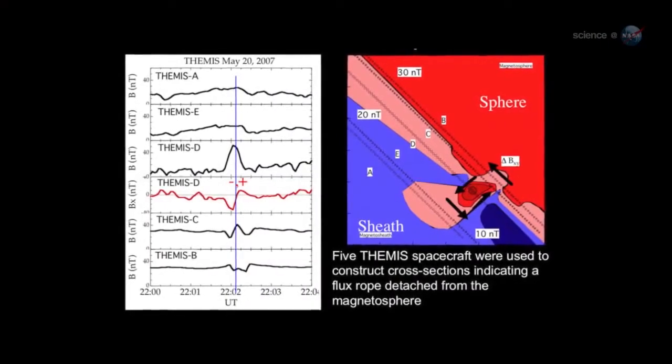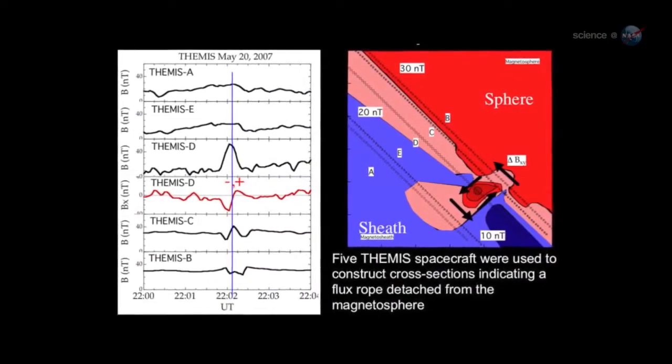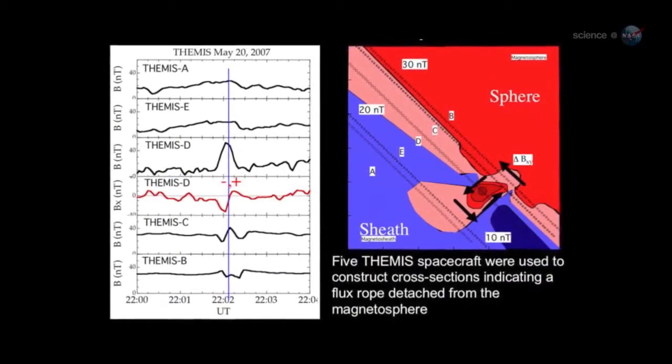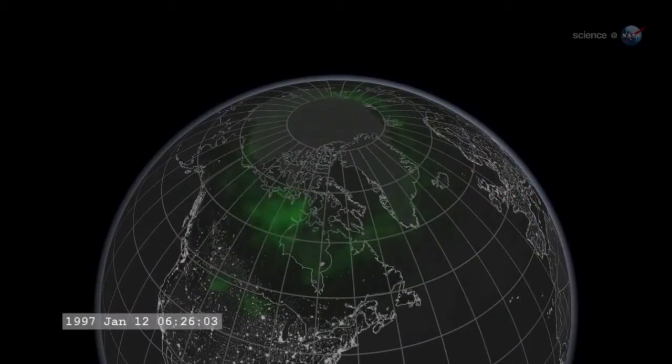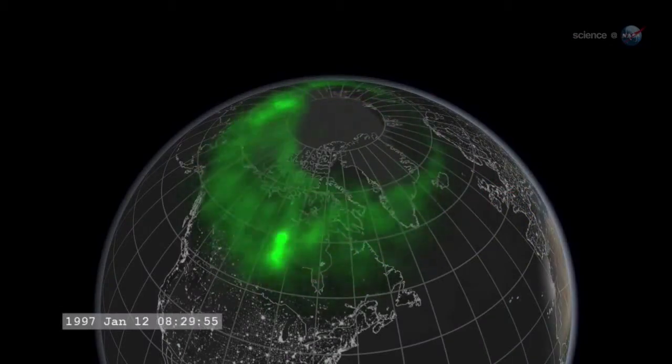Most portals are small and short-lived. Others are yawning, vast, and sustained. Energetic particles can flow through the openings, heating Earth's upper atmosphere, sparking geomagnetic storms, and igniting bright polar auroras.